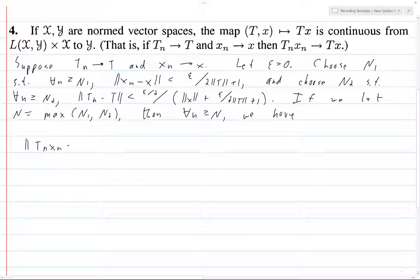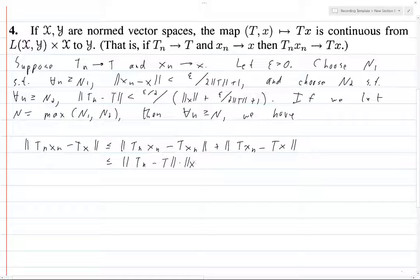tn xn minus tx is going to be less than or equal to—we're going to break it up using txn. And then let's see here, so this is going to be less than or equal to tn minus t, you basically bring everything out that you can factor out.